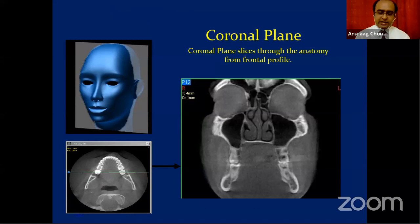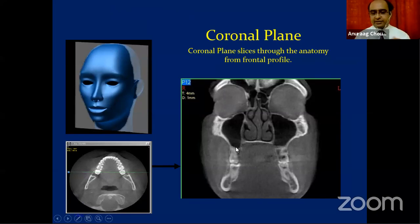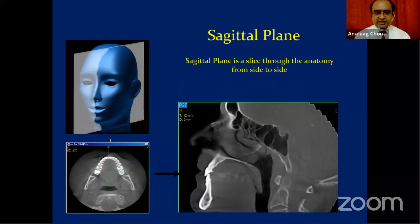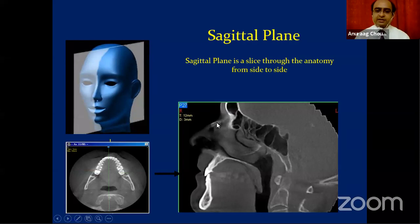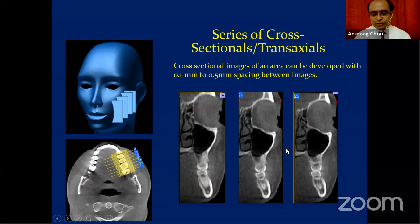The coronal section represents the frontal profile of the patient — you can see the orbit, sinus, nasal septum, turbinates, nasal cavity, floor of nose, palate, maxillary teeth, and mandible. The sagittal section is the lateral profile, where you can see the maxillary sinuses, frontal sinus, nasal septum, nasal bone, palate, and anterior teeth. MPR is called multi-planar reconstruction because it includes axial, sagittal, and coronal sections in the same image.